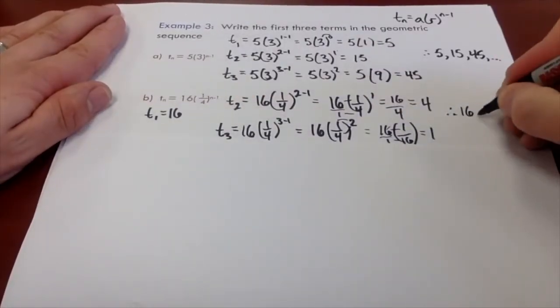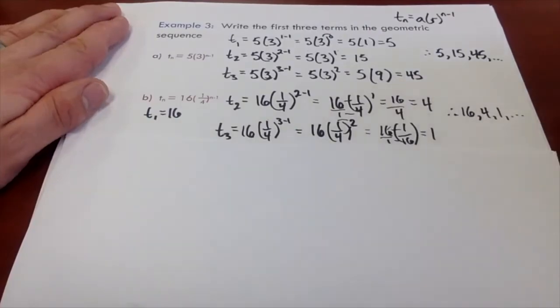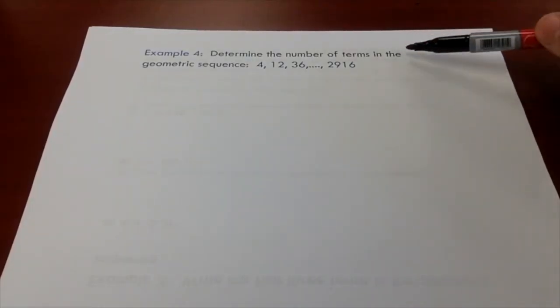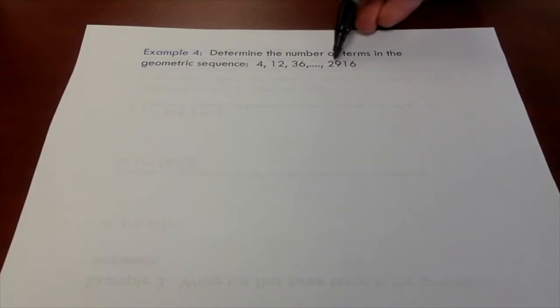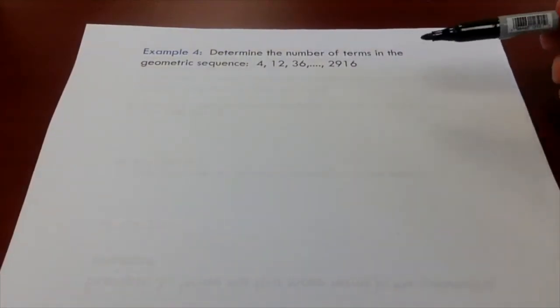We're going to start with our 16. That's our a value. We're going down to four and then one and so on. This is sort of a different type of problem. I want you to determine the number of terms in this sequence. So we're starting at four and we're applying some pattern and we're continuing to apply that pattern until we get 2,916.